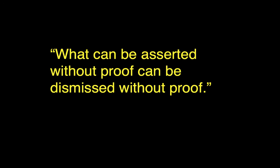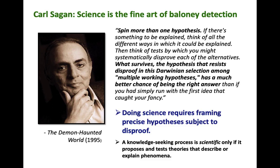What can be asserted without proof can be dismissed without proof. Astrophysicist Carl Sagan thought that science is the fine art of baloney detection. Spin more than one hypothesis. If there is something to be explained, think of all the different ways in which it could be explained. Then think of tests by which you might systematically disprove each of the alternatives. The hypothesis that resists disproof in this Darwinian selection among multiple working hypotheses has a much better chance of being the right answer. Doing science requires framing precise hypotheses subject to disproof. A knowledge-seeking process is scientific only if it proposes and tests theories that describe or explain phenomena.